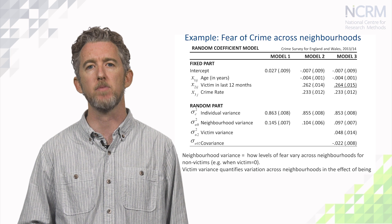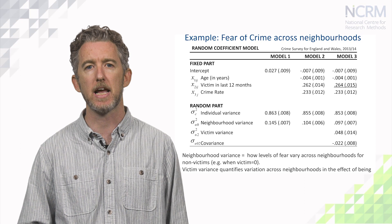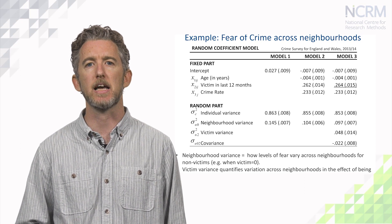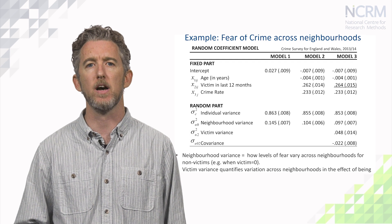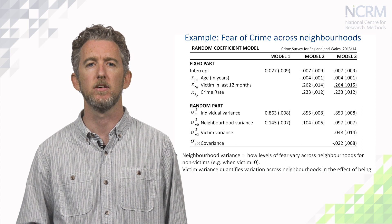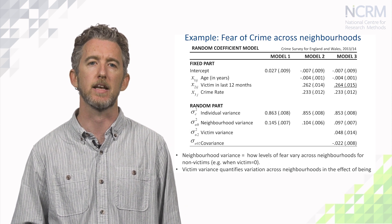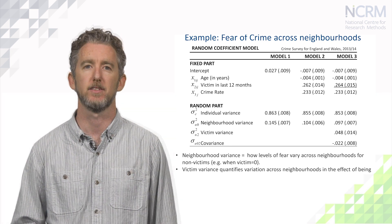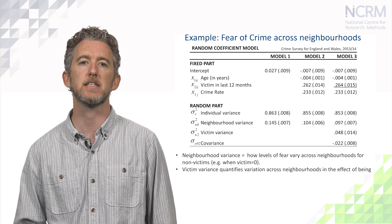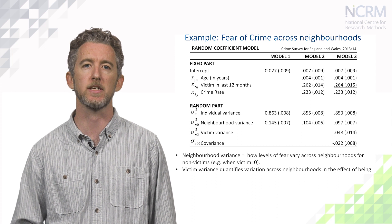Returning to our fear of crime example, we allow the positive effect of victim status to vary randomly across areas in Model 3. This allows for the possibility that the higher levels of fear amongst victims of crime may not be so apparent in some areas, whilst in other areas the difference between victims and non-victims may be bigger than average. Here we identify a significant variance term, suggesting there are differences in the magnitude of the effect of being a victim of crime on levels of fear across neighbourhoods.